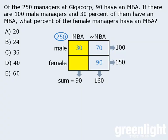Finally, these two boxes add to 90 and one box has 30 managers, so this box must have 60 managers.